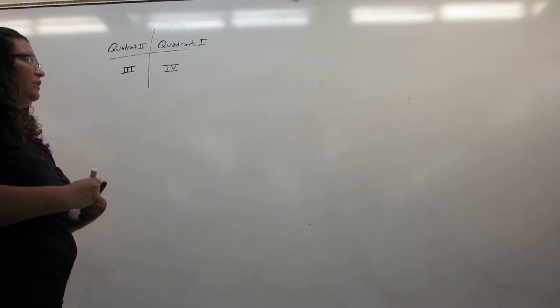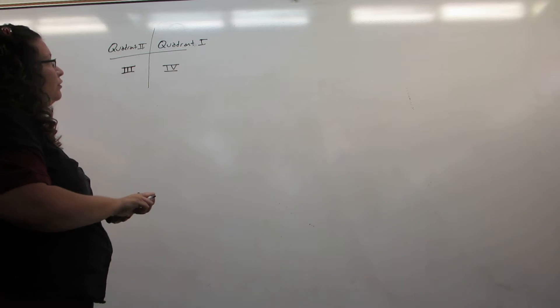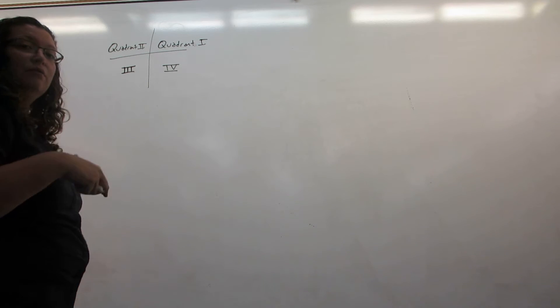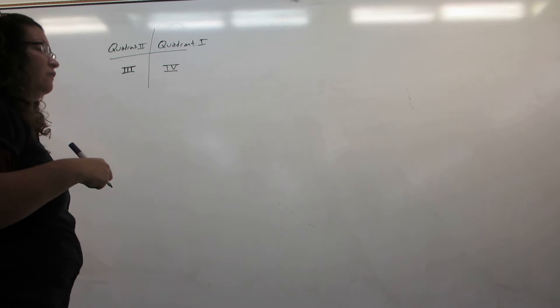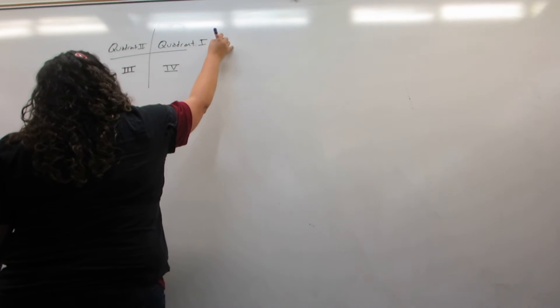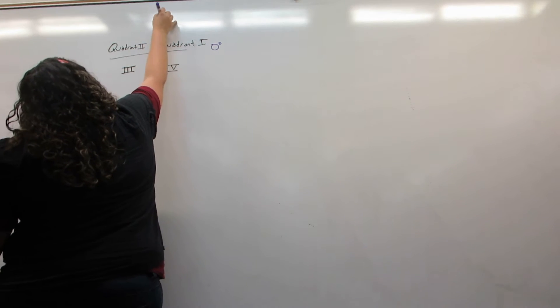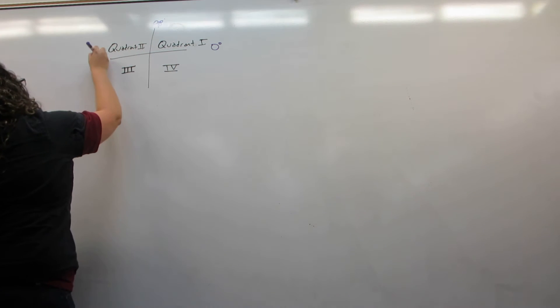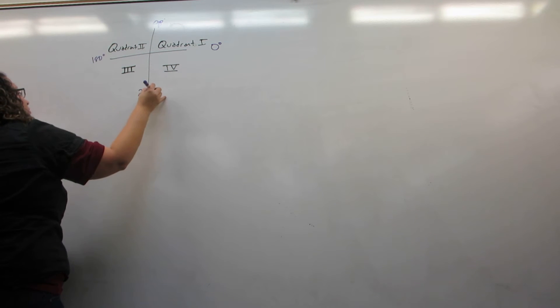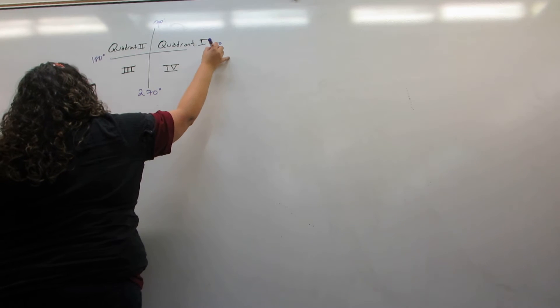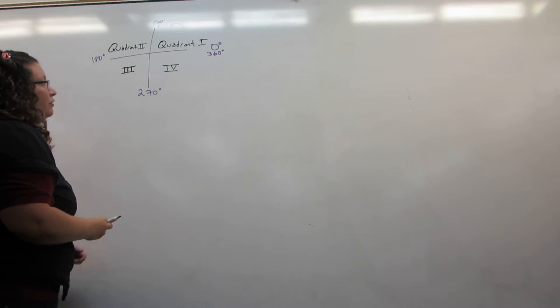Now just to make sure we understand the angles appropriately, we're going to go through and label first degrees and then radians that are the boundary of each quadrant. So zero degrees, 90 degrees, 180 degrees, 270 degrees, and back to 360 degrees.